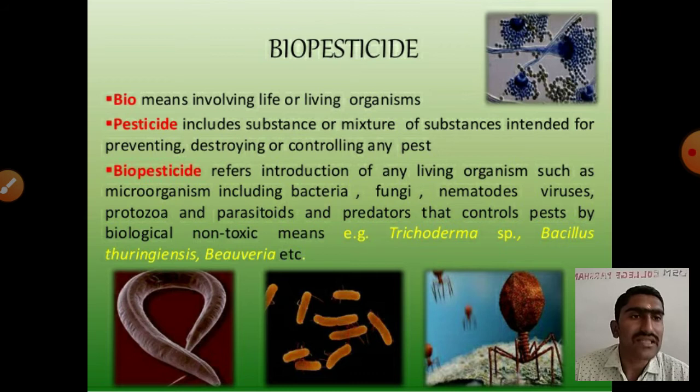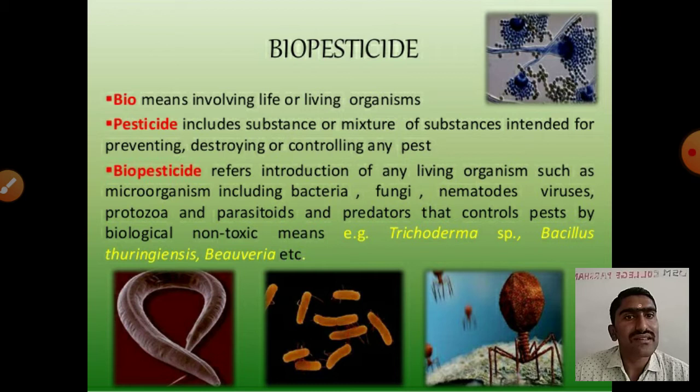Biopesticide refers to the introduction of any living organism such as microorganisms including bacteria, fungi, nematodes, viruses, protozoa, and parasitoids and predators that controls pest by biological, non-toxic means. Examples include Trichoderma species, Bacillus thuringiensis, Baculoviruses, etc.